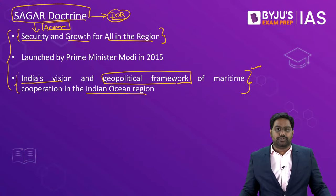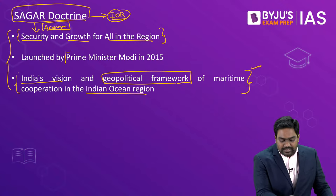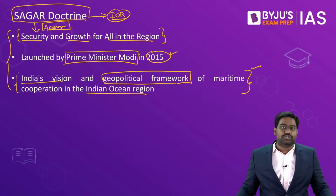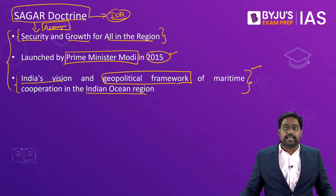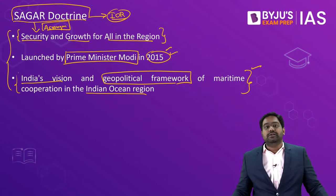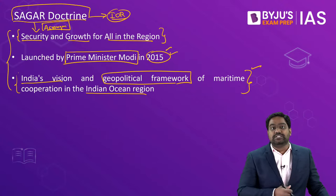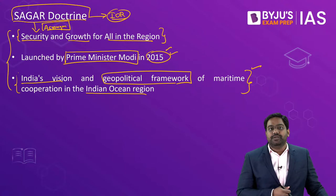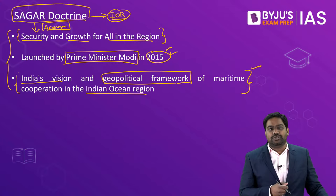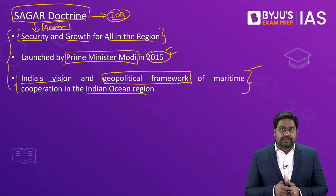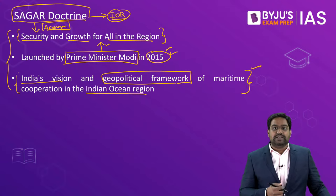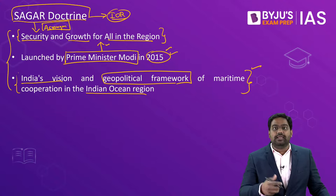The SAGAR doctrine provides for India's outreach into the Indian Ocean and lays down India's vision and geopolitical framework for maritime cooperation across the Indian Ocean region. This foreign policy doctrine was launched by Prime Minister Modi in 2015 when he was visiting two important Indian Ocean countries — Mauritius and Seychelles. During this visit, several key agreements were signed with these island nations, and the Prime Minister announced the launch of India's SAGAR doctrine.